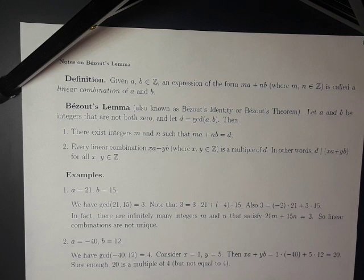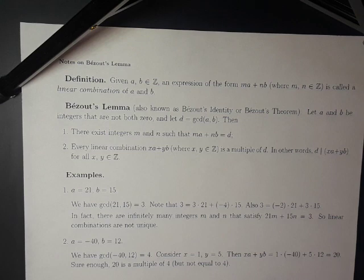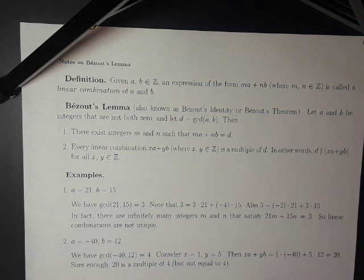For example, if a equals 21 and b equals 15, the GCD of 21 and 15 is 3. And sure enough, we can make a linear combination of 21 and 15 that equals 3: namely, 3 times 21 plus negative 4 times 15. But we can also write 3 as negative 2 times 21 plus 3 times 15. So you can see that linear combinations are not unique.